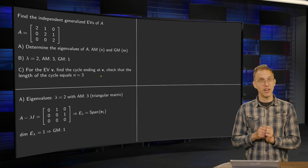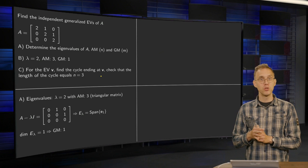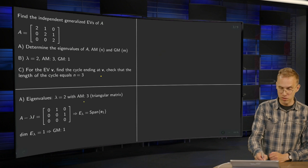So the eigenvalues are easy for this matrix A because we have a triangular matrix. You can read them off. They are all 2, 3 times. So algebraic multiplicity equals 3.